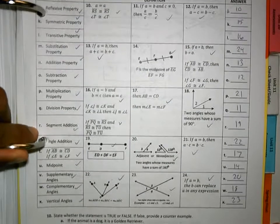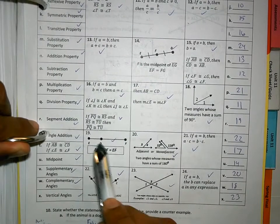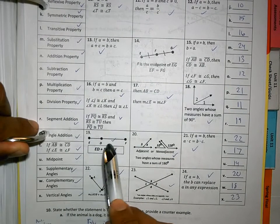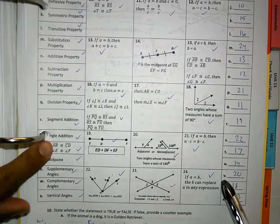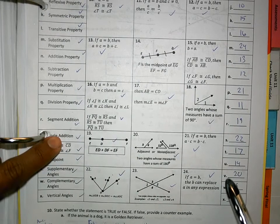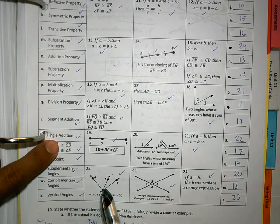R is number 19, where this piece plus that piece equals the whole piece. The angle addition, on the other hand, is where you add two angles to equal the whole angle, like the 22.